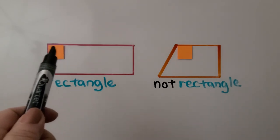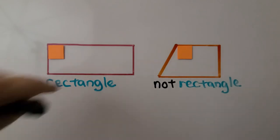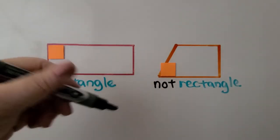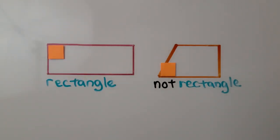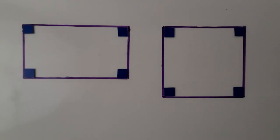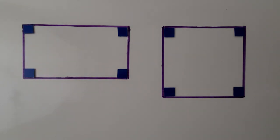We'll know it's a rectangle if it has four square corners — four square vertices. Each corner has to be square, like this one. Look — this corner doesn't make a square; see how there's a space here? If we move this down, this side goes through the square — that's not a square corner. So we can use a little square to check each corner, or the corner of a piece of paper or a card. Some rectangles will have two long sides and two short sides; some will have four sides of equal length, but all rectangles will have four square corners.